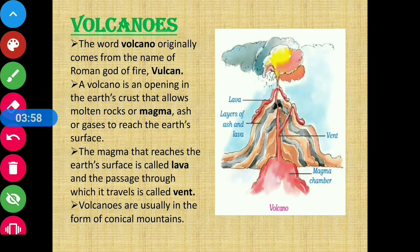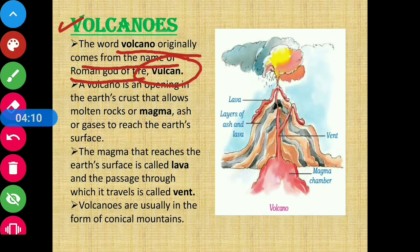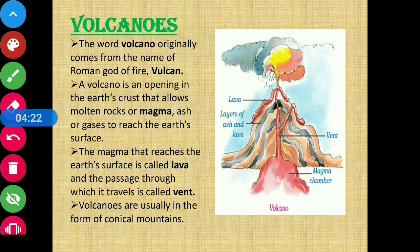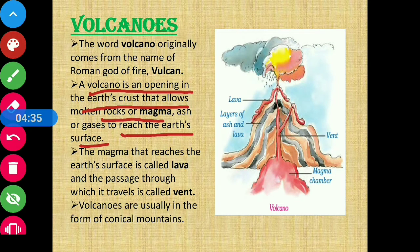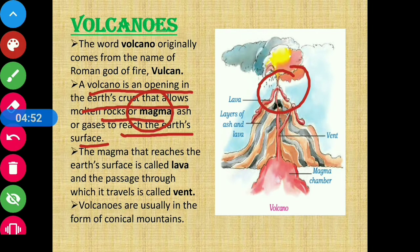First, we will discuss volcanoes. The word volcano originally comes from the name of the Roman god of fire, Vulcan. A volcano is an opening in the Earth's crust that allows molten rocks – or magma – ash, and gases to reach the Earth's surface.